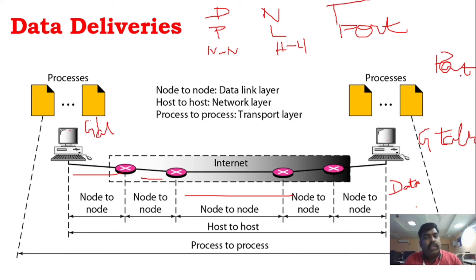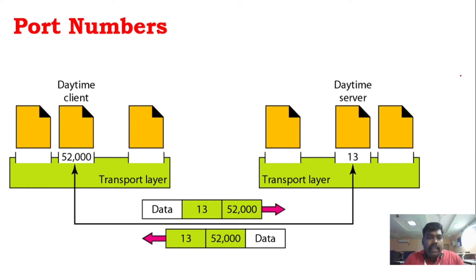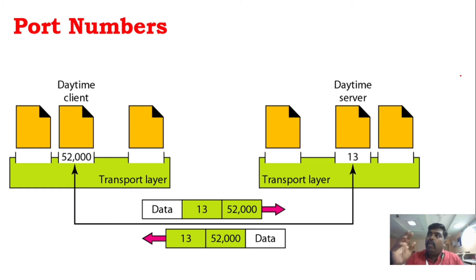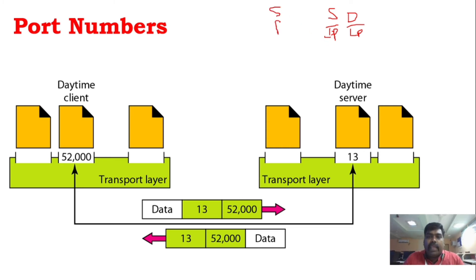Process-to-process delivery is very important and it requires port numbers. For any particular process, port numbers are needed so that the correct source and destination can be identified.